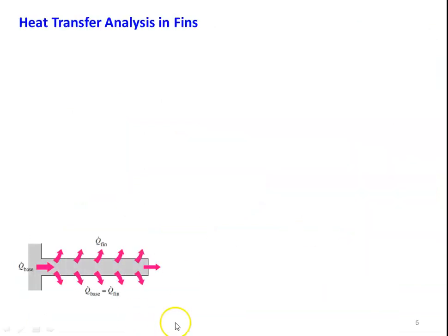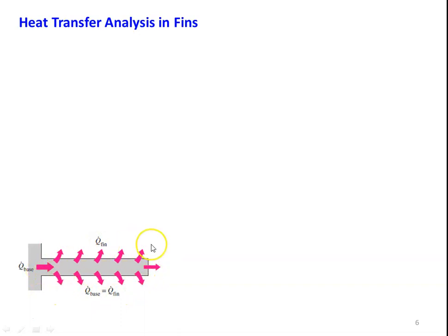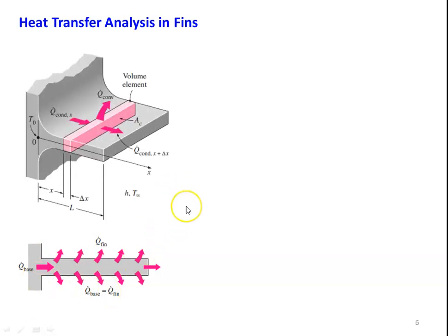For the heat transfer analysis of the fin, we take a rectangular fin. The fin is attached to a base; heat is given to the fin from the base by conduction. Heat is conducted from the base of the fin to the tip of the fin. The fin surface is exposed to the convection environment, so heat is removed by convection. Heat transfer in a fin is the combination of conduction and convection heat transfer. We first derive the heat transfer equation for the fin considering both modes.